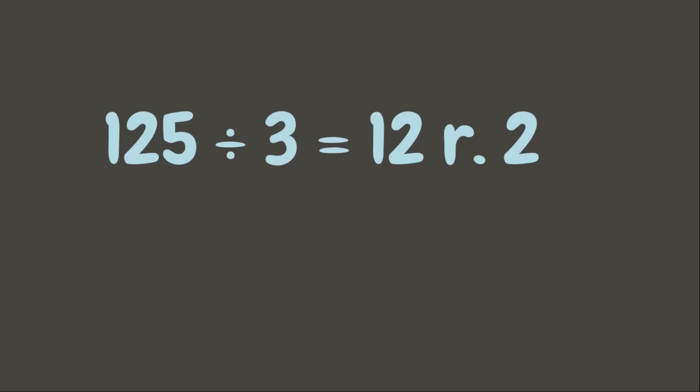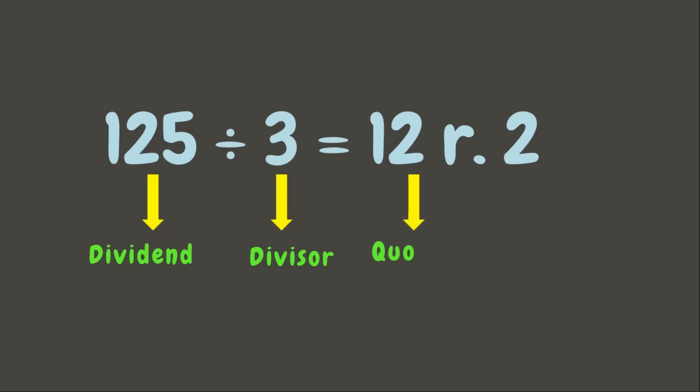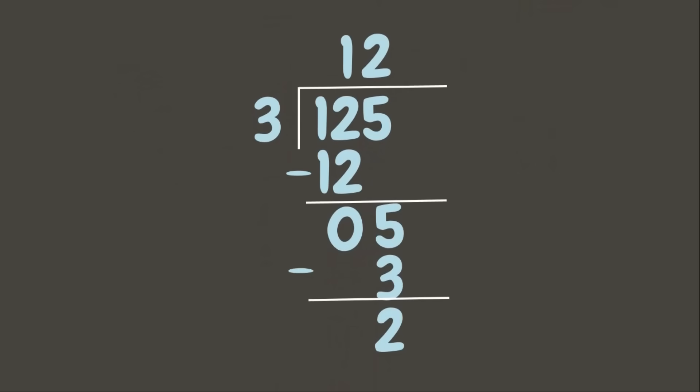The first number, or the number being divided, is called the dividend. The second number, or the number that divides the dividend, is called the divisor. The answer is called the quotient, and there is also the remainder.